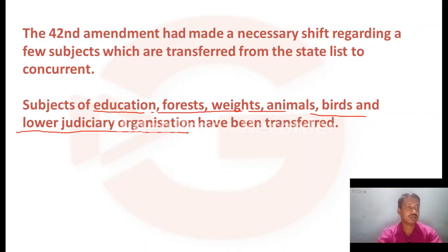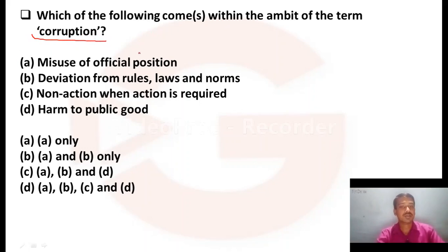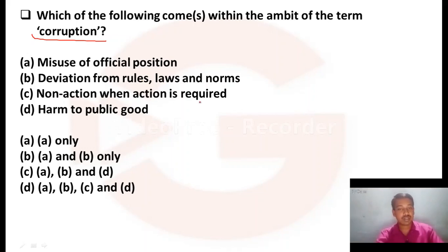Let us go to the next question. Which of the following comes within the ambit of the term corruption? Option A: Misuse of official position. Option B: Deviation from rules, laws, and norms. Option C: Non-action when action is required. Option D: Harm to public goods.